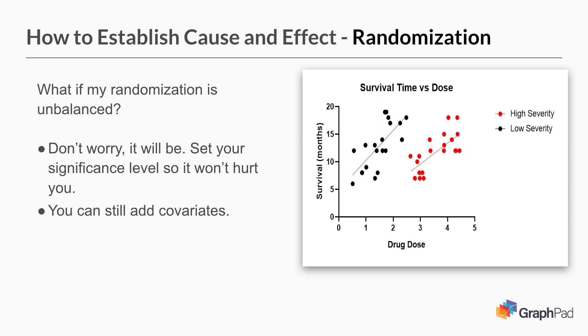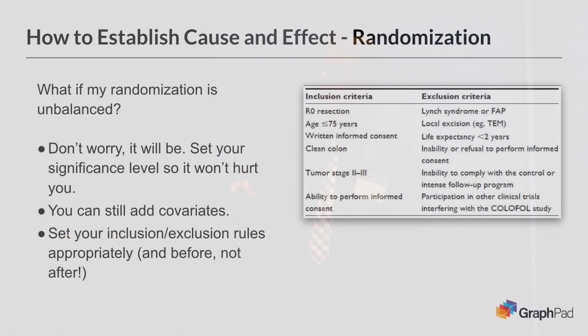You can still add covariates when you randomize, although most people don't. Statistically speaking, you can still put age or gender in the model, even though those variables will hopefully be roughly balanced with the randomization. Also, set your inclusion/exclusion rules appropriately and before you collect the data, not after. You don't want to afterwards say we should have excluded patients 75 and over because there were a couple in the treatment group that didn't do well. Set your exclusion rules so that you don't have really extreme patients in your study that might fall in one group or the other and really skew the result.